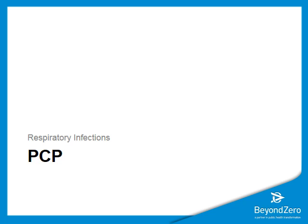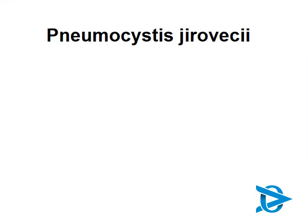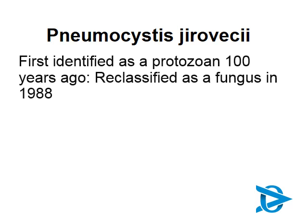One infection that often causes confusion is Pneumocystis jirovecii pneumonia, formerly known as Pneumocystis carinii pneumonia. The organism was first identified as a protozoan 100 years ago, then reclassified as a fungus in 1988, at which point the name changed from carinii to jirovecii. It cannot be cultured.